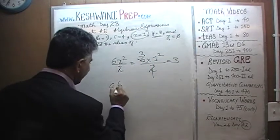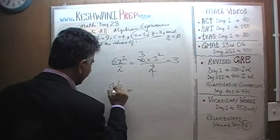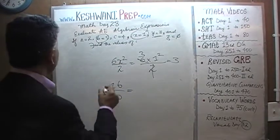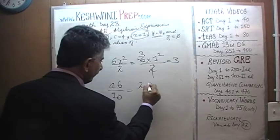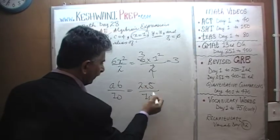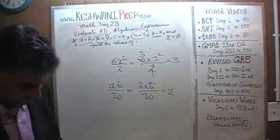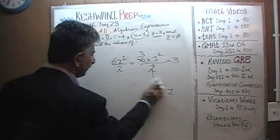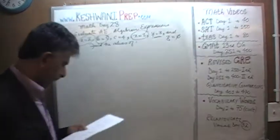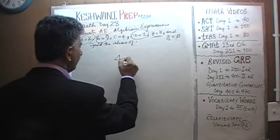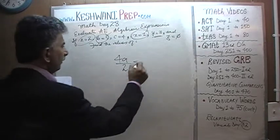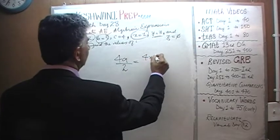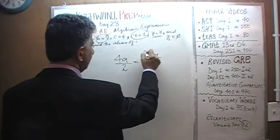Then we have A times B over 10. A is 2, B is 5 over 10, so it's just 10 over 10, which is just going to be 1. How about 4A over 2. 4 times A, which is 2 over 2, is just going to be 4.